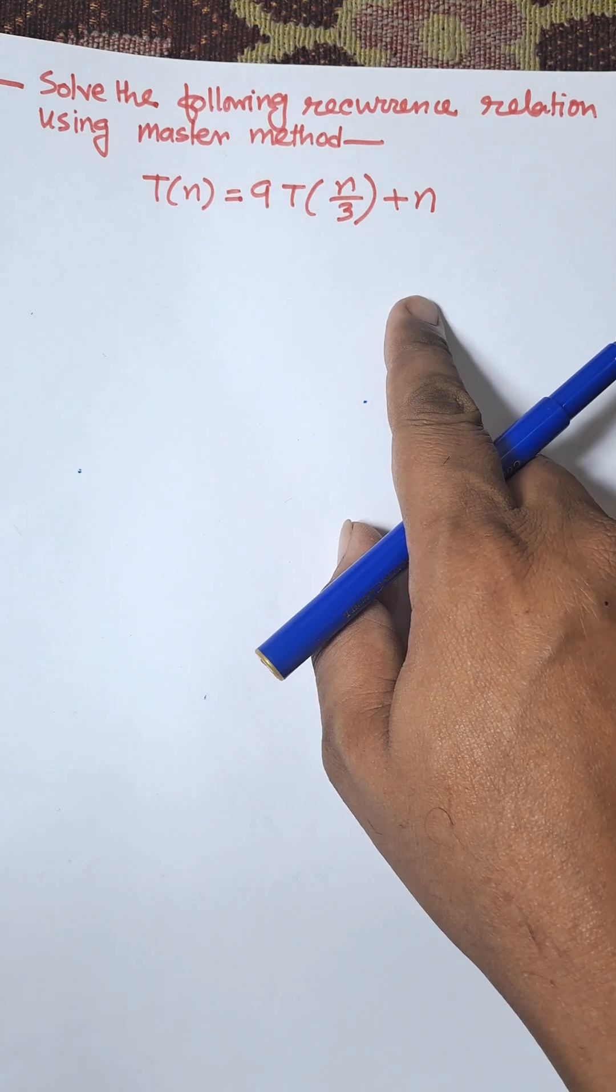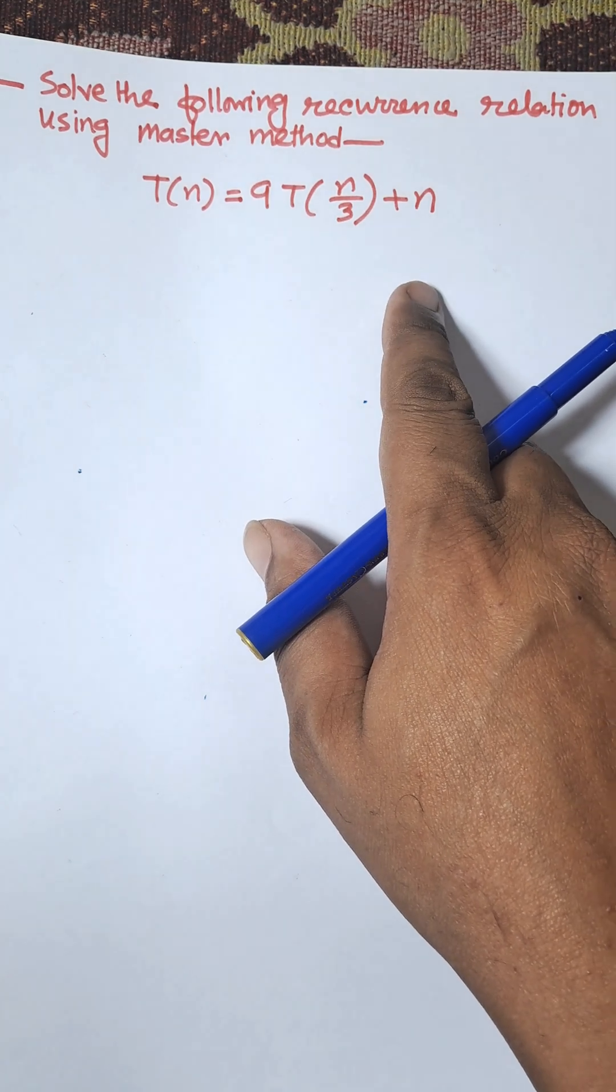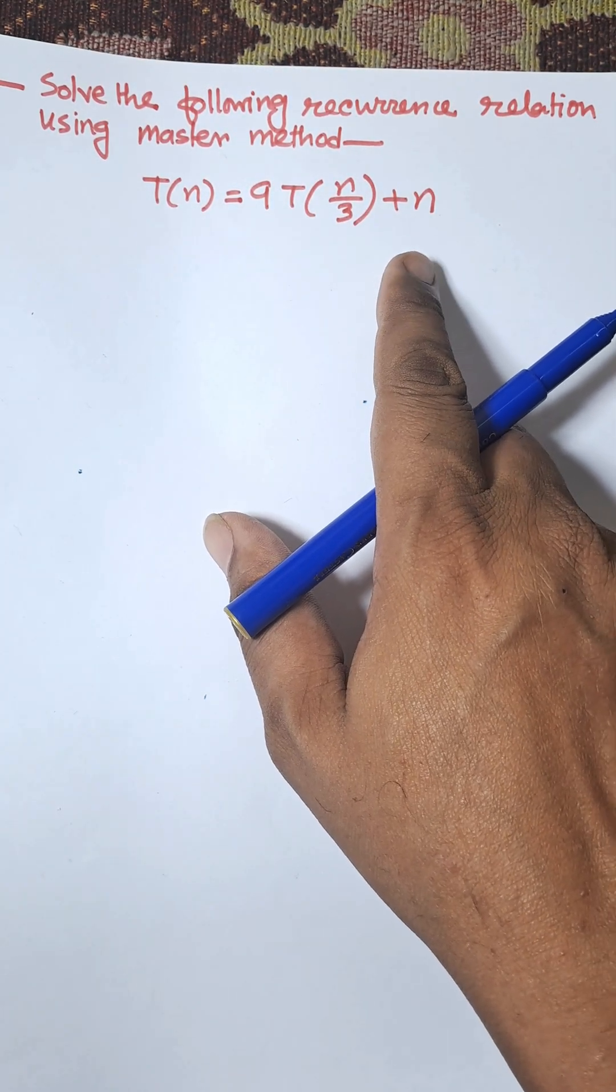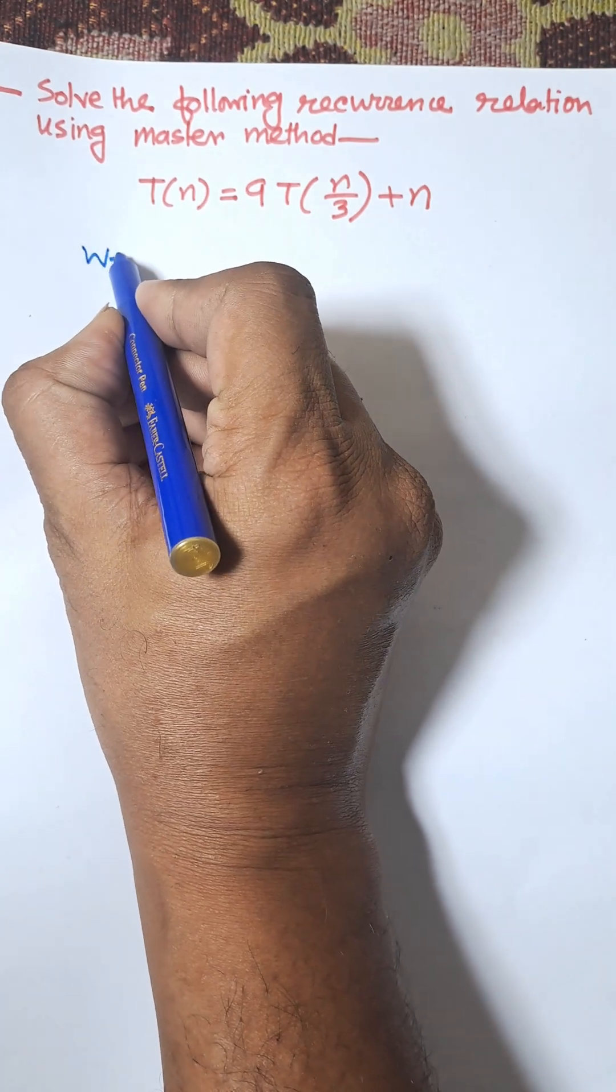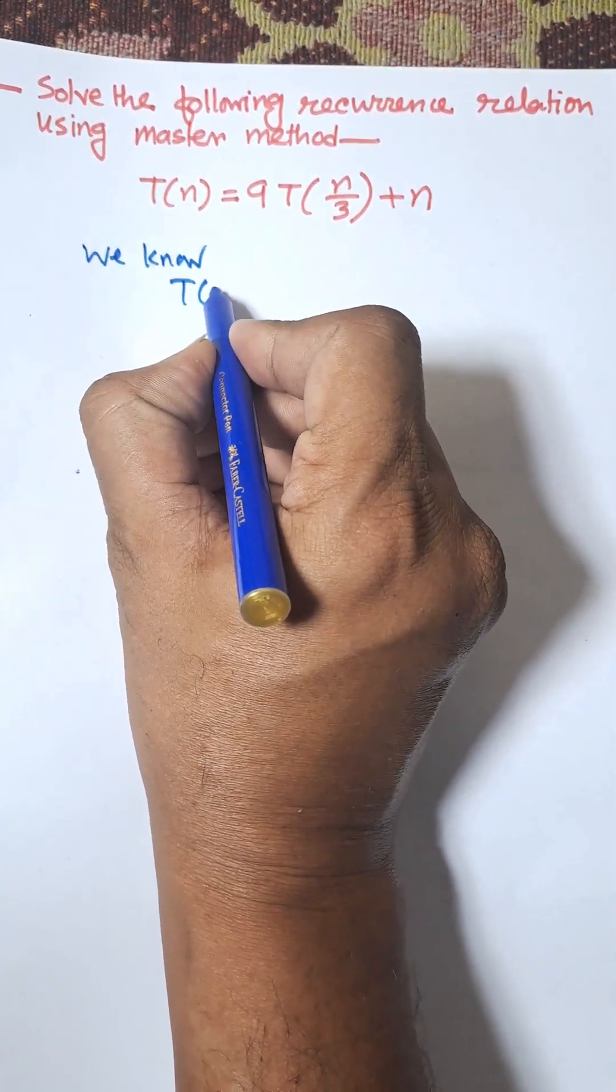Hi everybody, in this video I am going to discuss the following recursion relation using Master Method. We need to find the time complexity of this recursion relation using Master Method. We know from Master Method T(n) equals a times T(n/b) plus f(n).